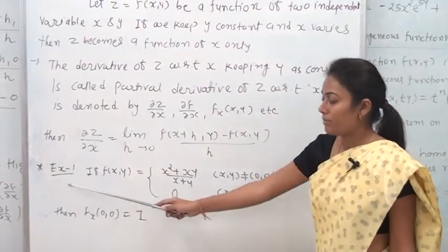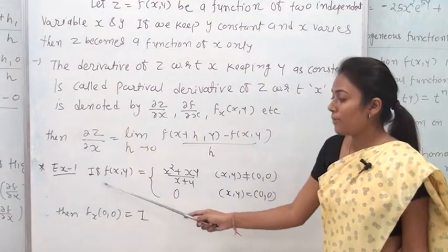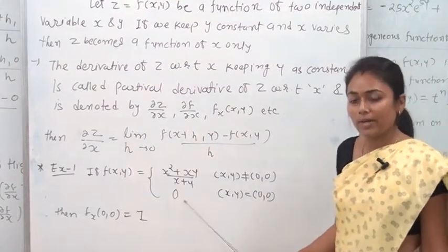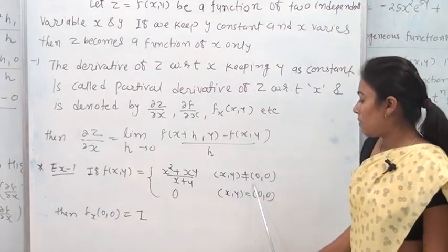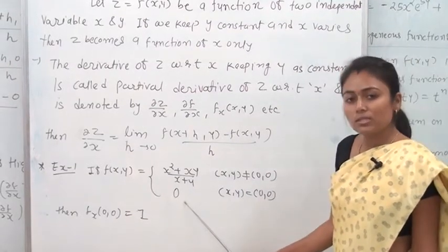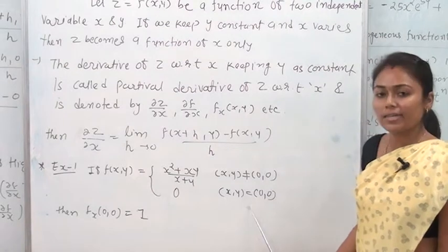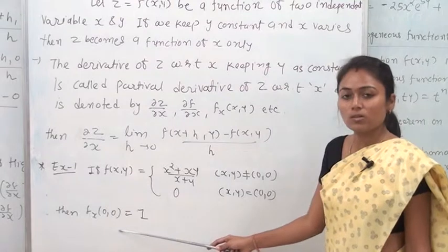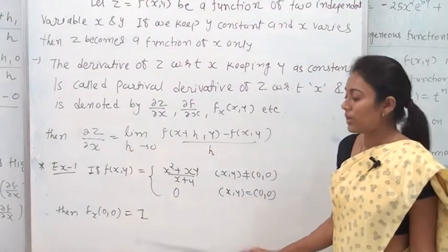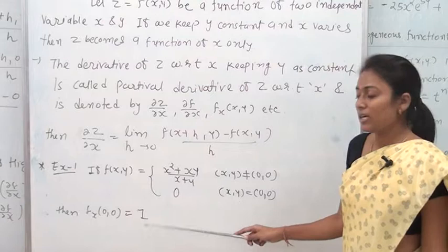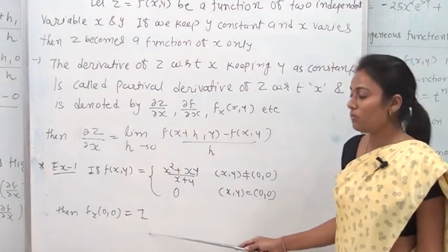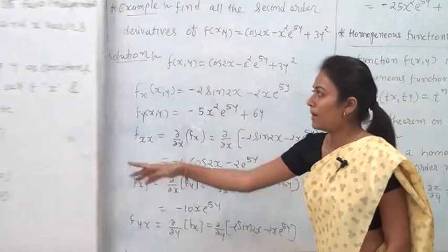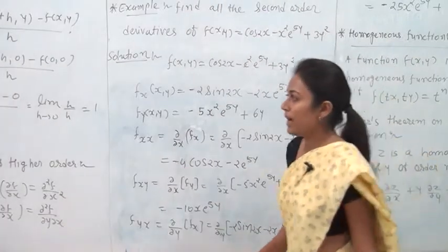Example: f(x, y) = (x² + xy) / (x + y) when (x, y) ≠ (0, 0), and f(0, 0) = 0. We need to prove that f_x(0, 0) = 1. We solve this example using the definition of partial differentiation.